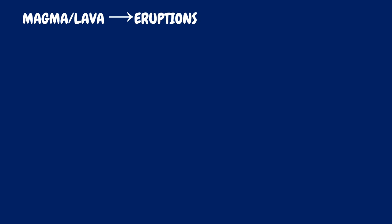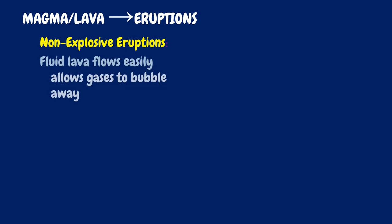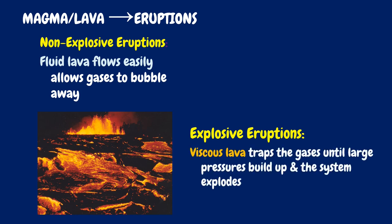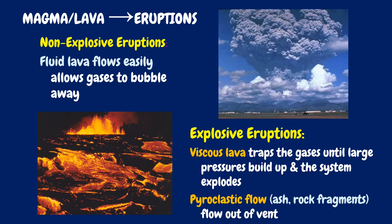Magma and lava are both products of eruption. In non-explosive eruptions, fluid lava flows easily and allows gases to bubble away. In explosive eruptions, there is viscous lava that traps gases until large pressures build up and the system explodes. Pyroclastic flow contains ash and rock fragments that flow out of the vent.